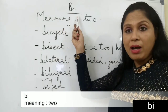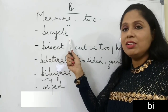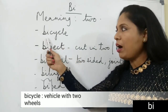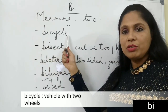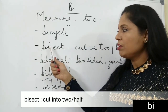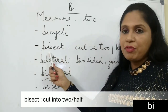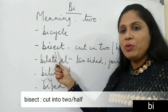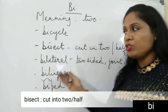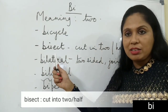The prefix bi- means two. A bicycle is a vehicle which runs on two wheels — bi meaning two, and cycle meaning wheels. Bisect: sect means section and bi means two, so when we cut something into two parts or halves, it means to bisect.